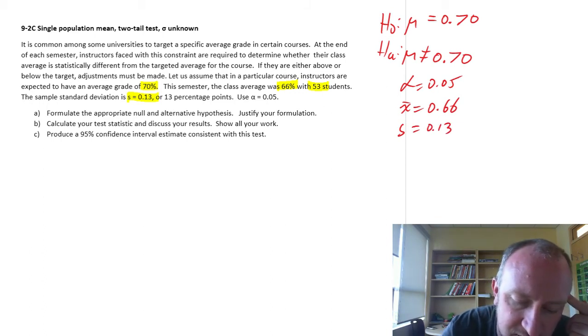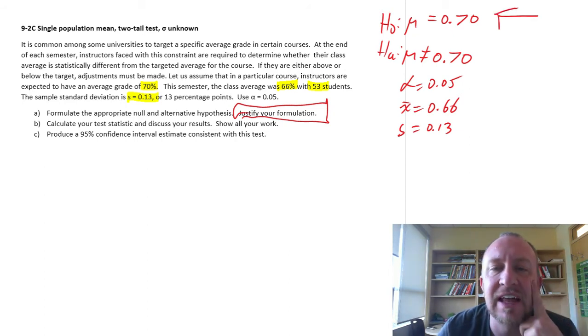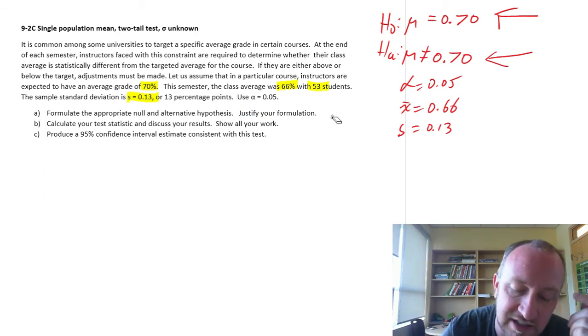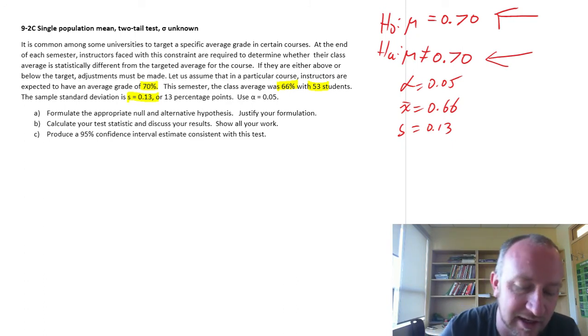So we have a level of significance given to us of 0.05. Our sample mean is 66% and the standard deviation is 13. If our evidence supports the null hypothesis, then I am unable to say that this class average is different from a 70% population average. If I reject the null hypothesis, if the evidence supports the alternative, then I'll have to make some adjustments to the grades because we're not achieving our goal of a 70% average. Now let's get into the test.